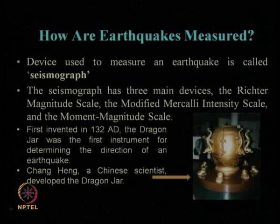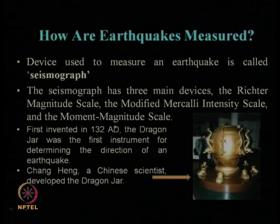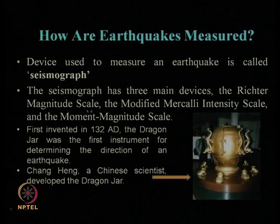We have also learned that there are three major devices by which we can estimate the earthquake: one is the Richter magnitude scale, another is the modified Mercalli intensity scale, and another is the moment magnitude scale. We can divide this measurement of earthquake into two major categories: quantitative measurement through magnitude scale and through intensity scale.